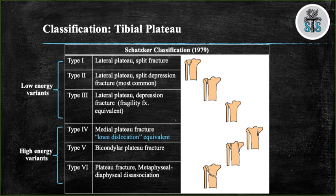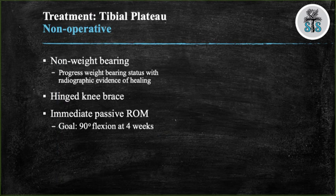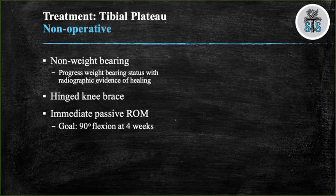For fractures where surgery is not indicated, the patient will be placed in a hinged knee brace with restricted weight bearing and gradual progression as radiographic healing is seen. Range of motion will slowly progress with the goal of reaching 90 degrees of flexion by 4 weeks. In the past, tibial plateau fractures were treated with a cast for one month, which resulted in extreme stiffness.